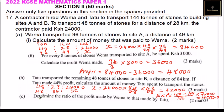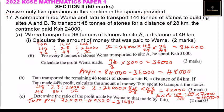Now determine the ratio of the profit made by Wemma to that made by Tatu. Tatu's profit is 72,000 minus 40,320, which equals 31,680. Wemma had made a profit of 48,000. So the ratio of 48,000 to 31,680 simplifies to 50 is to 33. That is the ratio of profit made by Wemma to that made by Tatu.